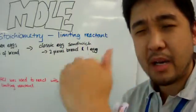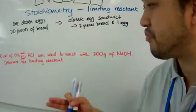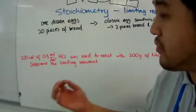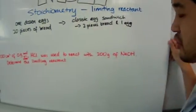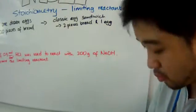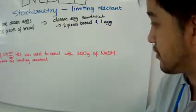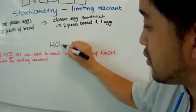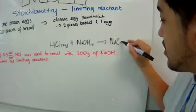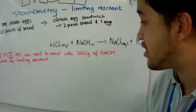So in chemistry, how do we apply this concept in the form of stoichiometric calculations? Let's look at a classic example. I have 200 cm³ of hydrochloric acid with a concentration of 0.5 molars, and it was used to react with 200 grams of solid sodium hydroxide pellets. Determine the limiting reactant. First, we write the balanced equation: HCl (aq) + NaOH (s) → NaCl (aq) + H₂O (l). That's the balanced equation.